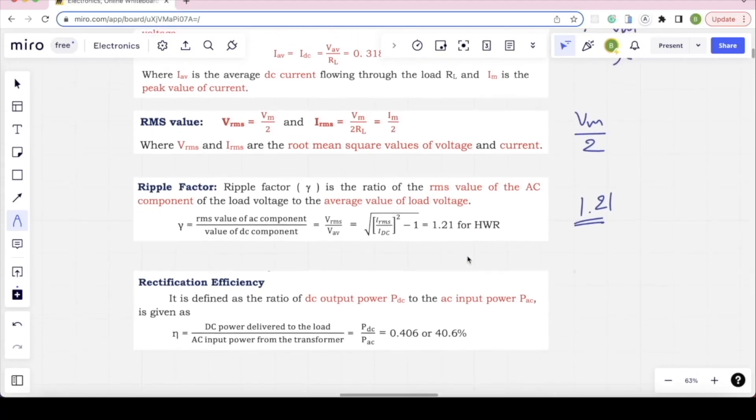Next one is efficiency. Rectification efficiency is nothing but output by input. Input AC to output DC. In half-wave rectifier case, it is 40.6% efficiency. Half-wave rectifier efficiency is very low.